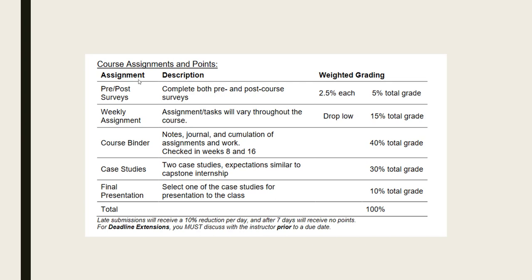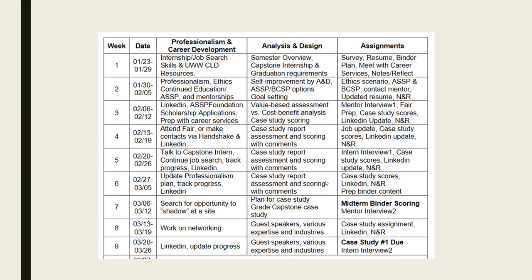Here are the course assignments. Please do that pre-survey — that's two and a half percent of your overall grade. If you do the one at the end for the class climate, that's another two and a half percent, so that's 5% of your grade. For the weekly assignments, it's 15% of your grade but I will drop the lowest. For the course binder, we grade it twice during week eight and week sixteen — the balance of the two is 40% of your grade. You'll be doing two case studies, that's 30% total — 15% each. You'll also do a final presentation of your favorite one, which is 10%. So the little things you do more frequently actually give you a majority of the grade.